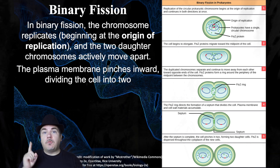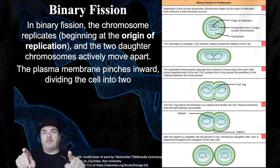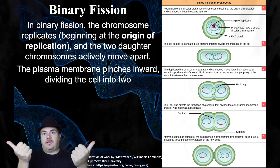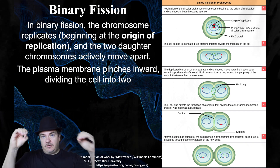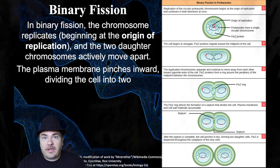To summarize: bacteria or prokaryotes have one small circular chromosome with one origin of replication. You start copying the DNA at the origin of replication and keep going around the chromosome until you've copied the entire thing, giving you two copies. The two origins of replication move to opposite sides of the cell, and the cell pinches in the middle to become two separate cells. That's binary fission — how prokaryotes or bacteria do cell division and reproduction.